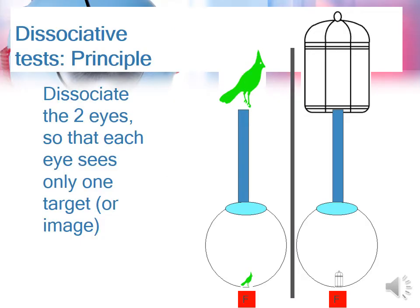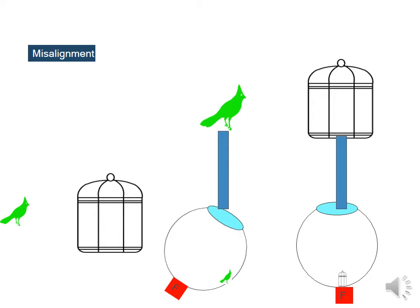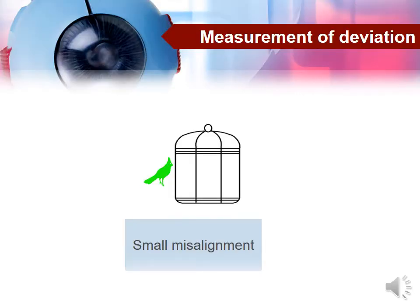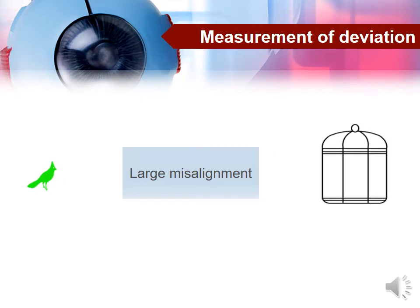All dissociative tests have essentially the same principle — we dissociate the two eyes by ensuring that each eye sees only one target or one image. If the patient has no misalignment, the target will fall on the fovea of each eye and the brain will perceive the two images as superimposed. If the patient has misalignment of one eye, the image won't fall on the fovea, and the patient will perceive that the bird is outside the cage. If the misalignment is small, the displacement will be small; if large, the displacement will be larger.